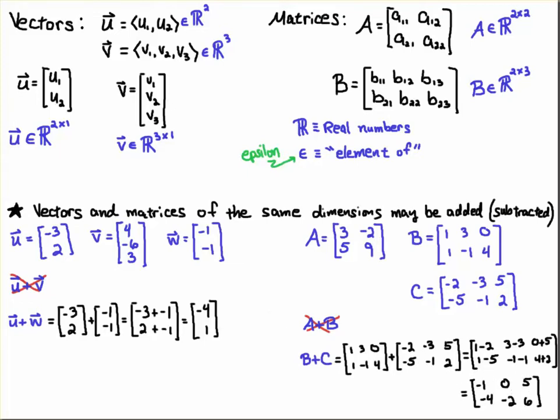Now there's another operation we can perform, and that is scalar multiplication of the matrix or even of a vector. But I'll use the matrix as an example. Let's say I want to multiply -2 times B. That's a perfectly legal operation, and what that means is we just multiply all the components by -2.